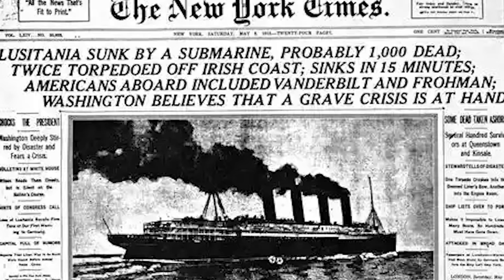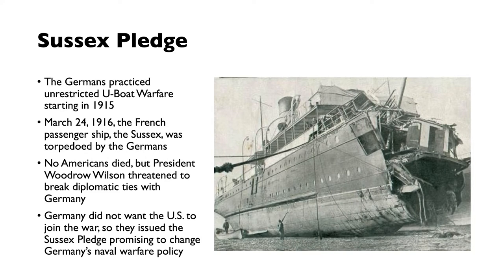There was also the Sussex Pledge. The Germans practiced unrestricted U-boat warfare starting in 1915. On March 24, 1916, the French passenger ship the Sussex was torpedoed by the Germans. No Americans died, but Woodrow Wilson threatened to break diplomatic ties with Germany. Germany did not want the U.S. to join the war, as the U.S. was getting more powerful, more industrial, and had a bigger military. So the Sussex Pledge was issued — Germany promising to change its naval wartime policy so they would not attack ships, including American ships.